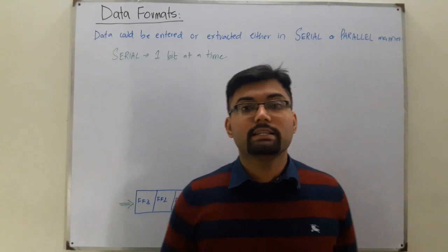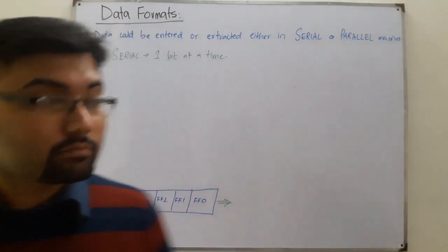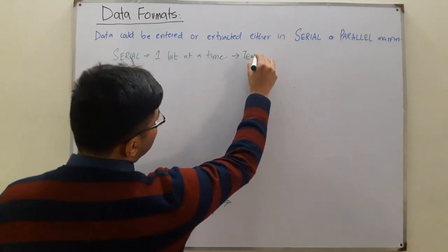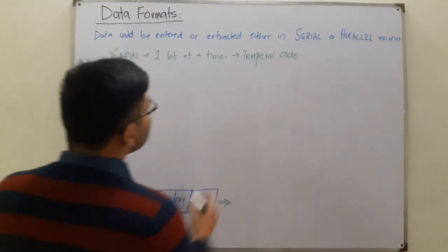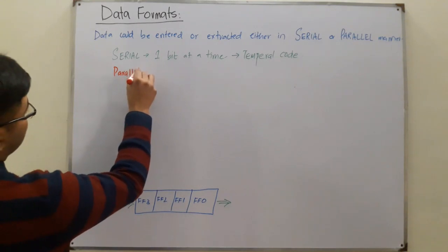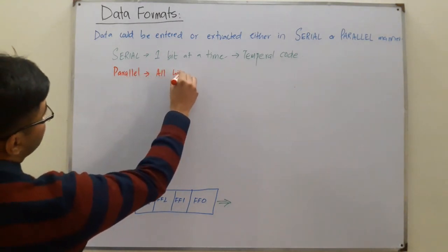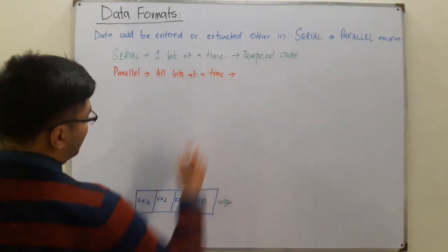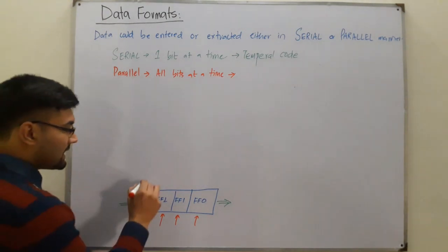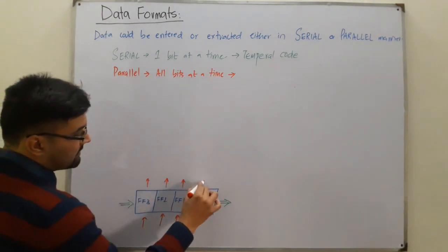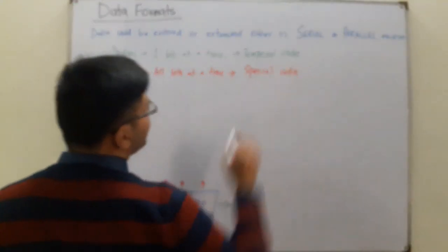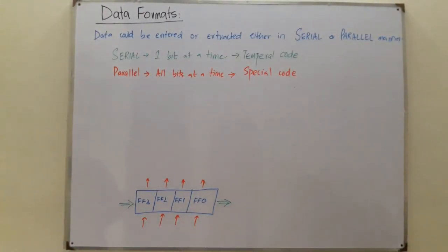This serial mode is also called the temporal code — when you are entering or extracting bits one at a time. In parallel mode, you have all bits at the same time, meaning the input to flip-flop three, two, one, and zero is provided separately and simultaneously. This parallel manner is called the special code.